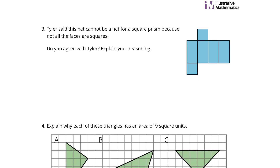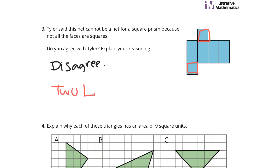In question 3, Tyler said this net cannot be a net for a square prism because not all the faces are squares. Do you agree or disagree with Tyler? Explain your reasoning. I disagree. When you look at these bases here — the two squares — you actually have two square bases. And since we name our prisms based on the shape of the base, this can be folded into a square prism.